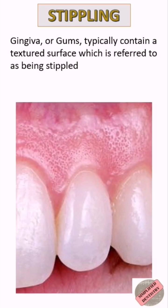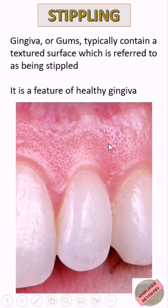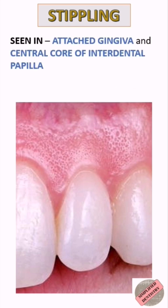Let's learn about stippling. The gingiva, or the gums, typically contain a textured surface which is referred to as being stippled. It is a feature of healthy gingiva and is absent in cases such as edema.